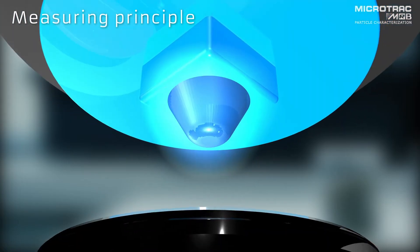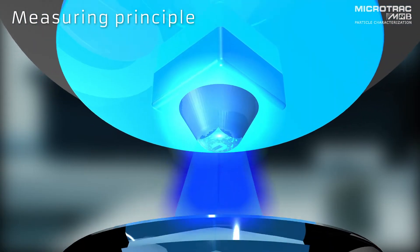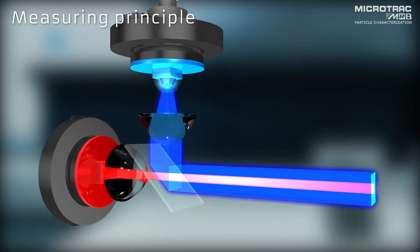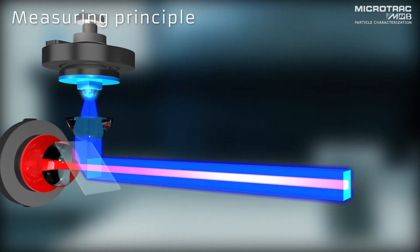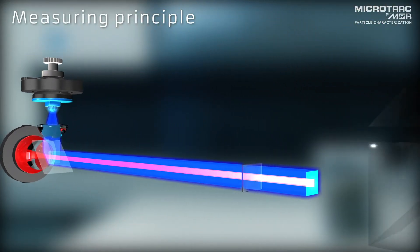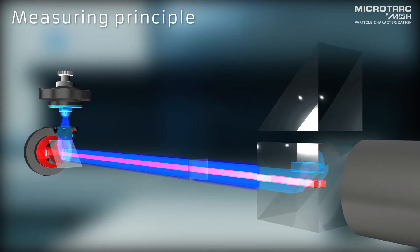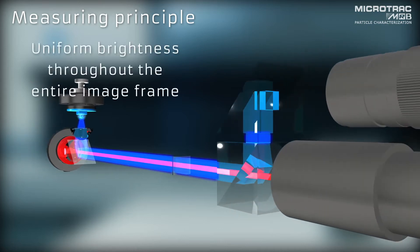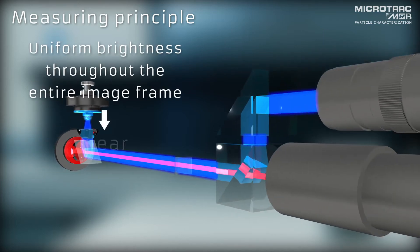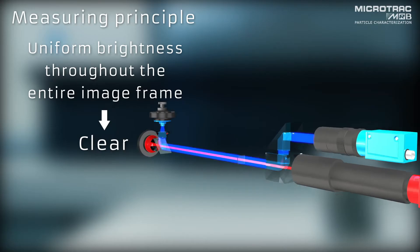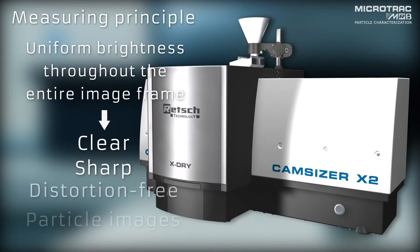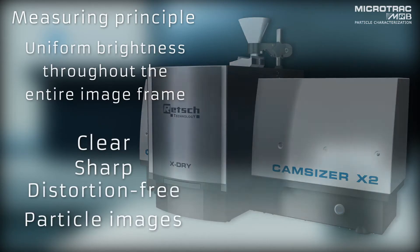The monochromatic light of two pulsed LEDs is collimated and focused to illuminate the detection area of each camera. This guarantees uniform brightness throughout the entire image frame, resulting in clear, sharp, and distortion-free particle images.